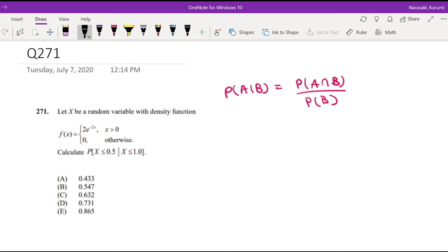So then we know that the numerator will just be equal to probability of x less than 0.5 and x is less than 1.0 divided by probability of x is less than 1.0.